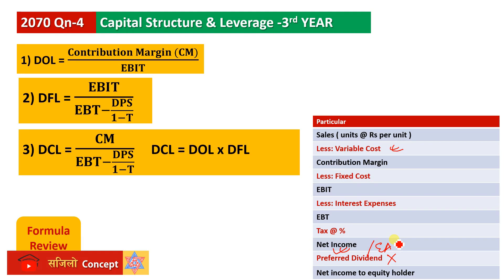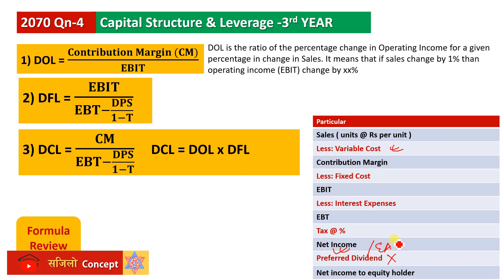I am going to explain the degree of operating leverage, degree of financing leverage, and degree of combined leverage. DOL is the ratio of percentage change in operating income for a given percentage change in sales — that is, percentage change in EBIT divided by percentage change in sales. If DOL is 2, and sales change by 1%, then operating income will change by 2%.